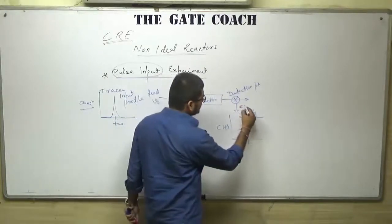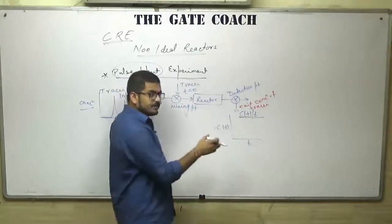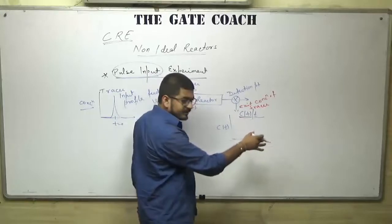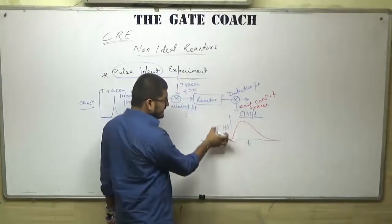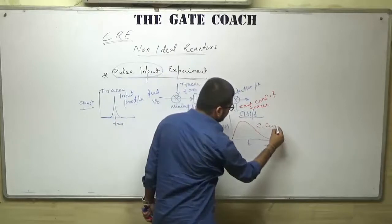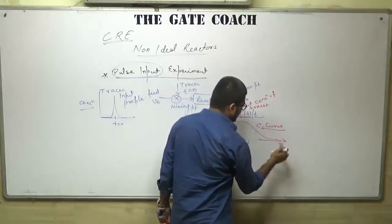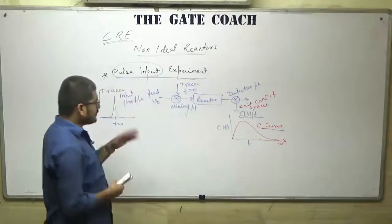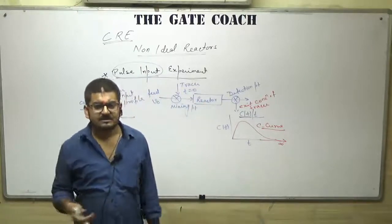At the reactor outlet — the detection point — we measure the concentration of the tracer with time. This is the exit concentration of tracer. Because of non-idealities, the exit concentration will be different for different time periods. When you draw the curve, it comes out as a distribution curve. The curve drawn between exit concentration of tracer versus residence time for a pulse input experiment is known as the C curve. At infinite time, that curve will touch the x-axis, meaning all molecules will have left the reactor.